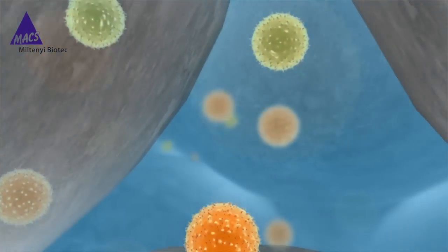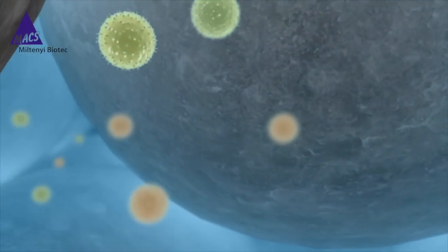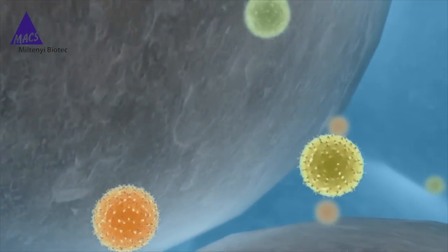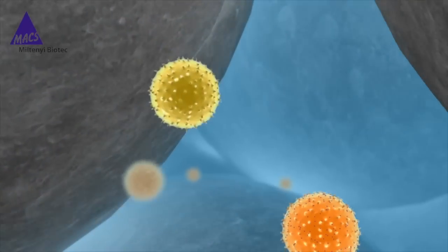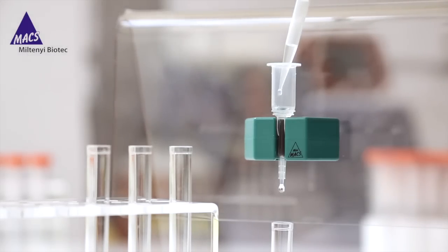The column matrix greatly amplifies the magnetic field. Therefore, minimal cell labeling is sufficient to effectively retain the cells. Columns ensure labeled cells can be washed thoroughly without compromising on yield.